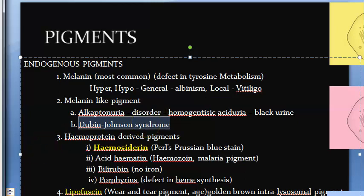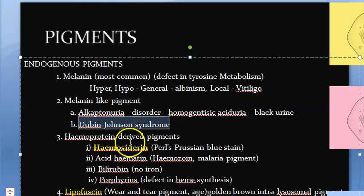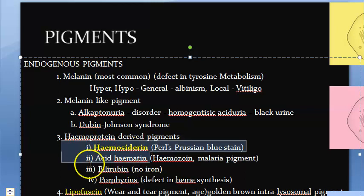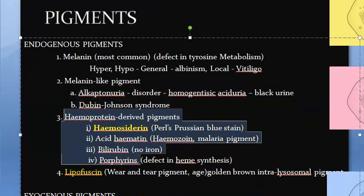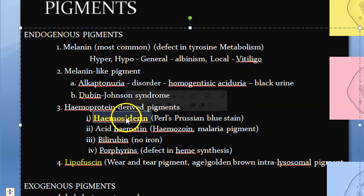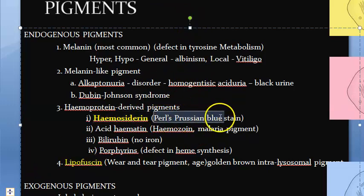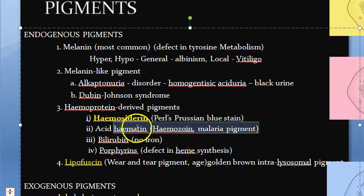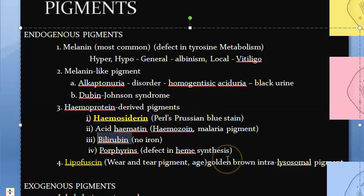Next are the heme protein-derived pigments — pigments coming from hemoglobin, specifically from the heme part. You have hemosiderin, which is brown and stained with Pearls Prussian blue stain. Then there is acid hematin, also called hemozoin, which is the malaria pigment — the Plasmodium converts heme into hemozoin.